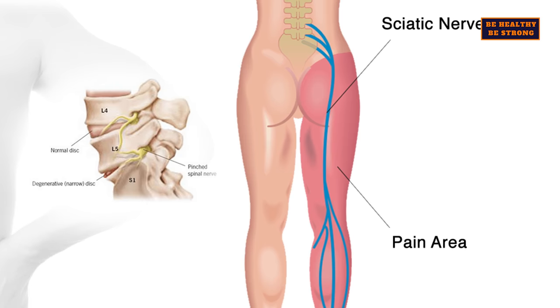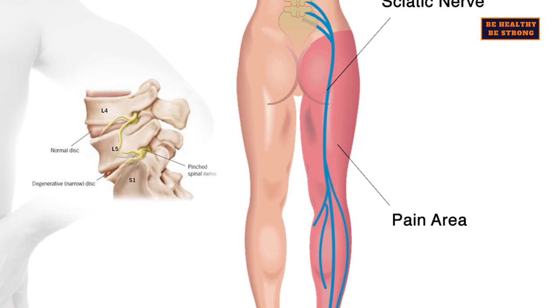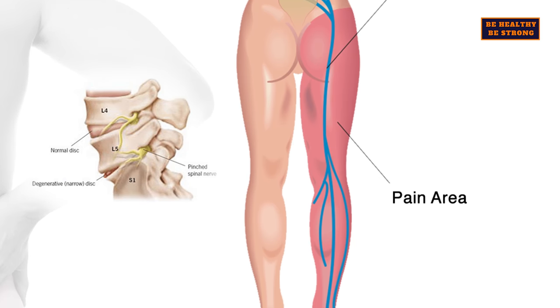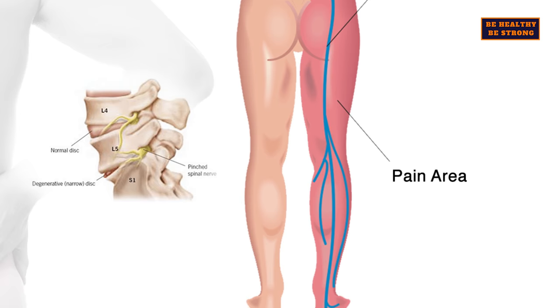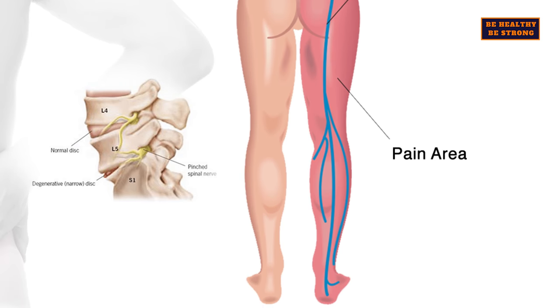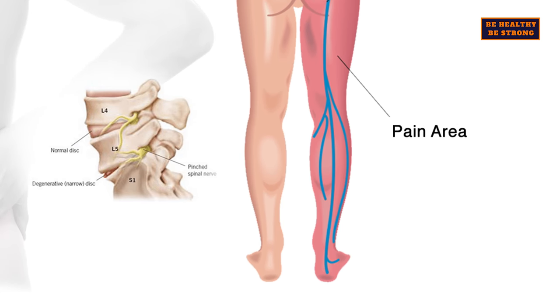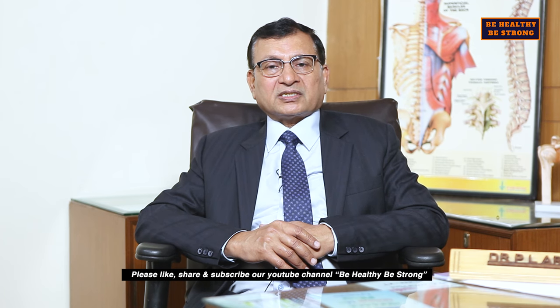The most common condition is sciatica, where disc disease causes compression of the sciatic nerve. When it is compressed, there is swelling and pain, which radiates from the lower back down the back of the thigh and leg. It feels like an electric current and disturbs normal working.